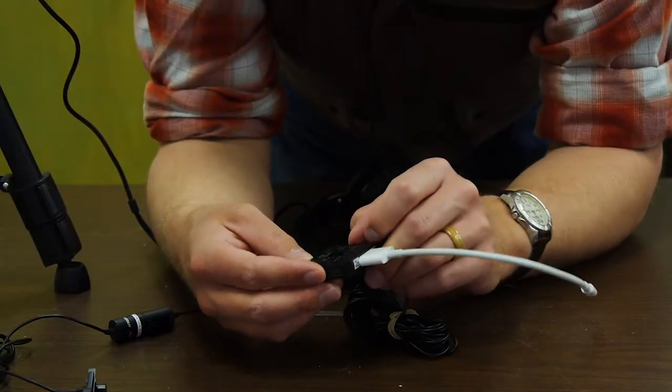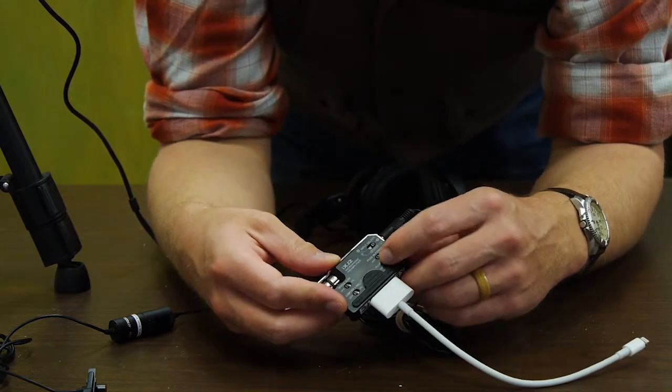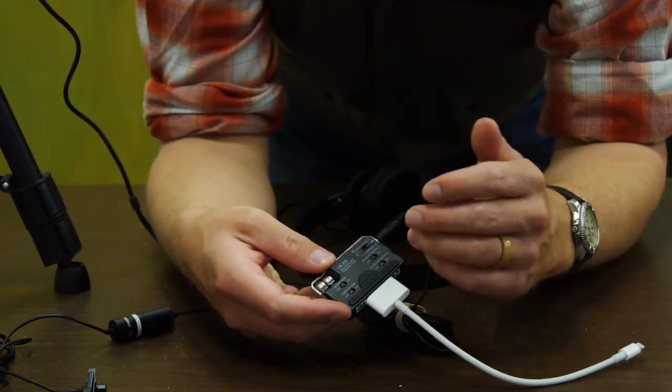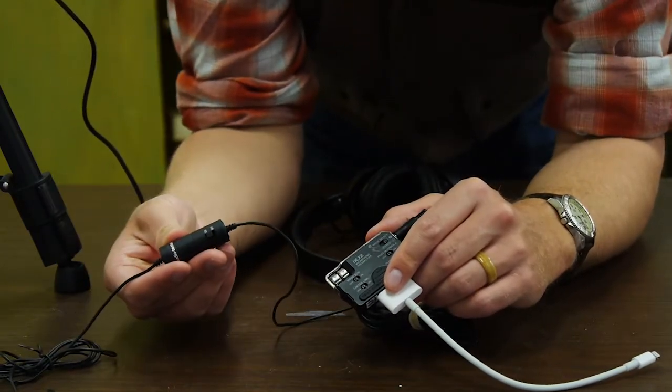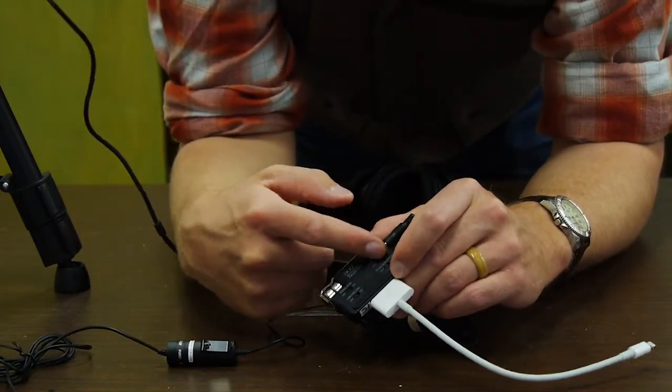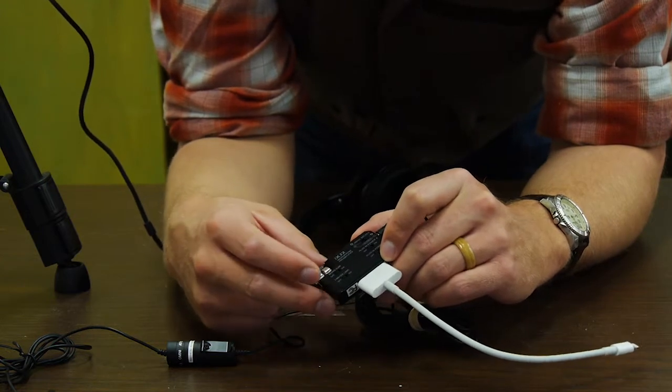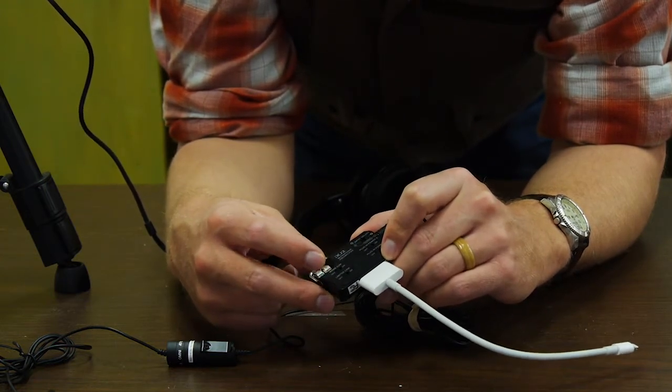The other settings down here are plug-in power for both A and B. What that means is, are we going to draw power from the iPad to power this microphone? In this case, because we have battery power separately, we don't need to. So those should be set to off. Limiter link can be set to off, and mono sum can be set to off.